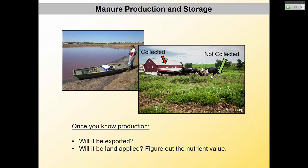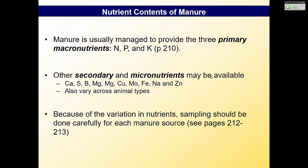Once you know production, you ask: what are they going to do with it? On the Eastern Shore, a lot is exported — to composting facilities, a pelletizing plant for poultry litter, or other farms with land. We also have no-land plants where all they have are chicken houses and no land to apply to, so they must export. If it's going to be land applied, you have to determine the nutrient content, what crops they're growing, and how much they're allowed to put out based on crop need and state regulations.